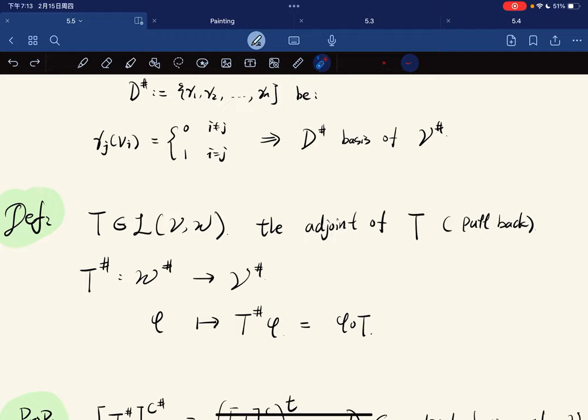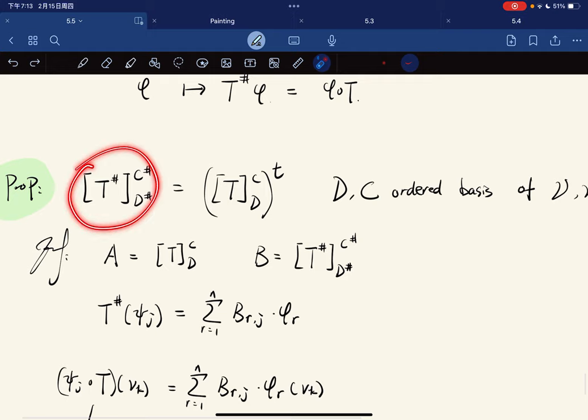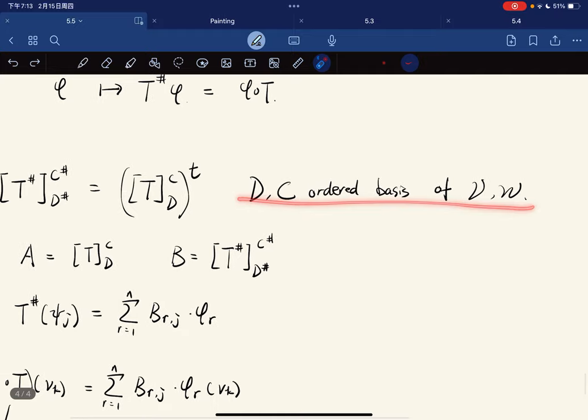This definition makes sense. The proposition is that the matrix of T* is the transpose of the matrix of T, where D, C are ordered bases of V and W respectively.